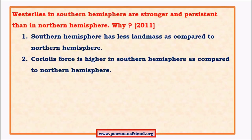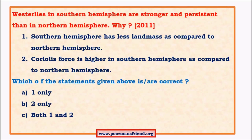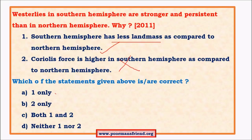Regarding westerlies being stronger and more persistent in the southern hemisphere: this is because the southern hemisphere has less land mass compared to the northern hemisphere, so there is less friction — point one is correct. However, the statement that Coriolis force is higher in the southern hemisphere is wrong. Coriolis force is an apparent force that depends only on the rotational effect, which is the same in both hemispheres. Hence the Coriolis force is equal in both hemispheres. So only the first point is correct.